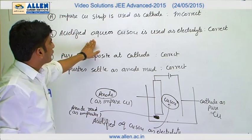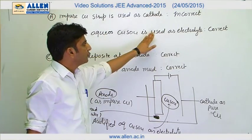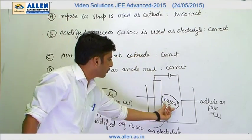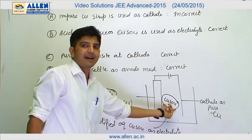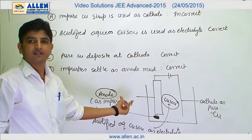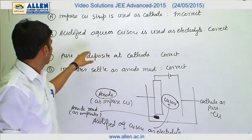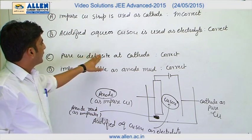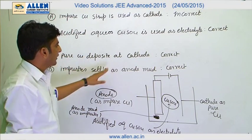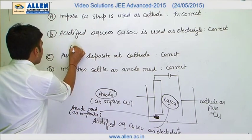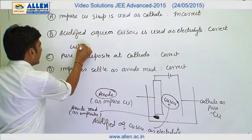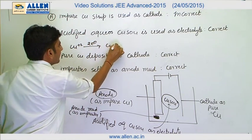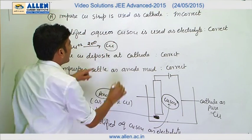Statement B: Acidified aqueous copper sulphate is used as an electrolyte. Statement C: Aqueous copper sulphate is used as the electrolyte. Pure copper deposits at the cathode. The cathode reaction is that copper 2+ ions accept two electrons and deposit as copper at the cathode.